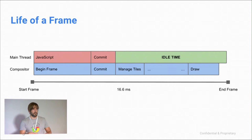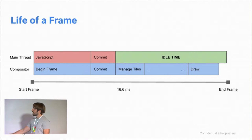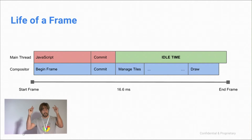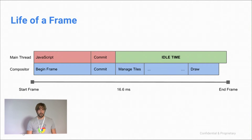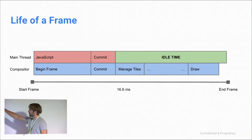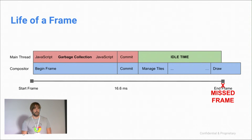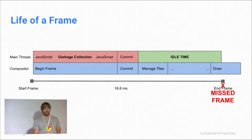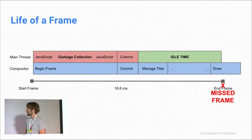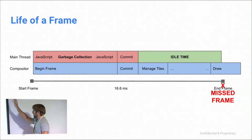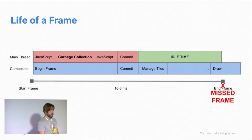But what if a terrible garbage collection happens? It basically pushes everything to the right — the handshake with the compositor happens later, drawing happens too late, and we miss the frame. But looking at more frames, we can see that before the missed GC event there was a ton of idle time where we didn't do anything. What if we could schedule garbage collection before, during that idle time? If we knew how long it would take, we could take advantage of it.